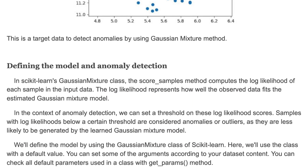In Scikit-learn's Gaussian Mixture class, the score_samples method computes the log likelihood of each sample in the input data. The log likelihood represents how well the observed data fits the estimated Gaussian Mixture model. In the context of anomaly detection, we can set a threshold on these log likelihood scores. Samples with log likelihoods below a certain threshold are considered anomalies or outliers, as they are less likely to be generated by the learned Gaussian Mixture model.